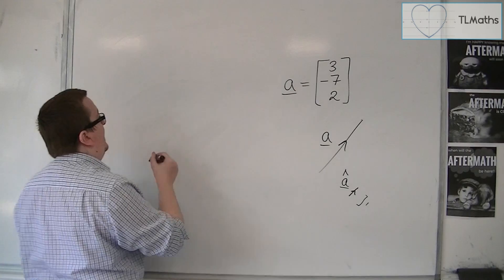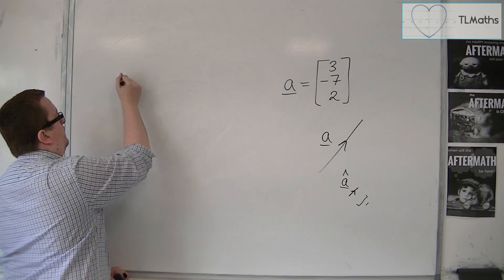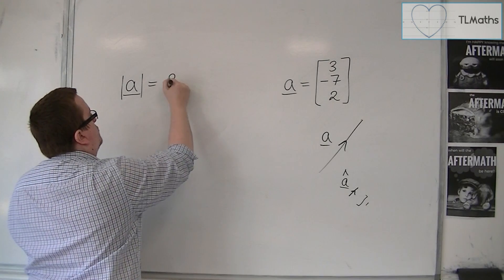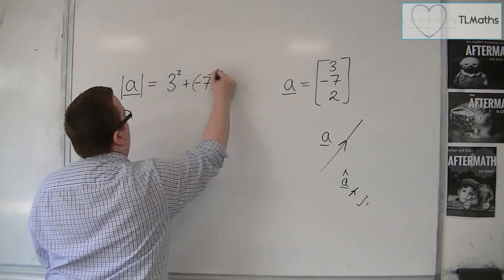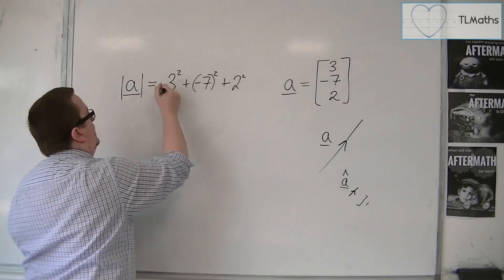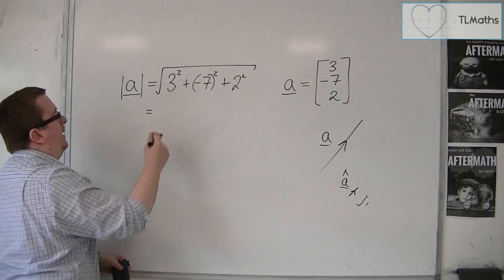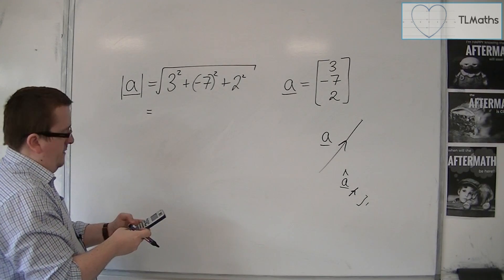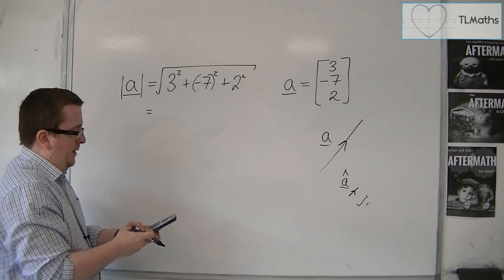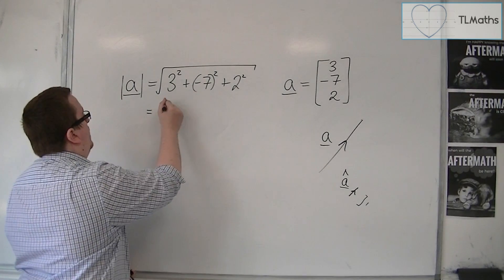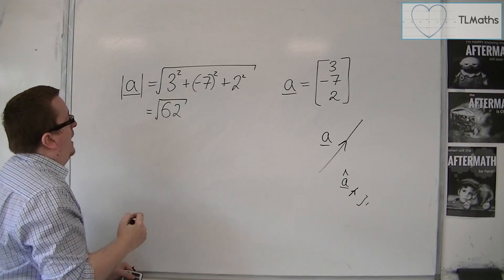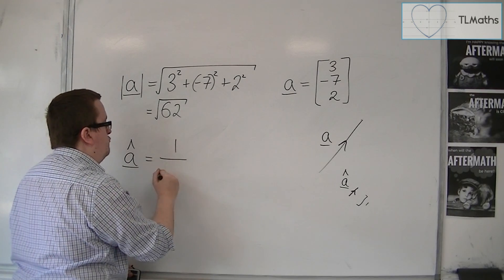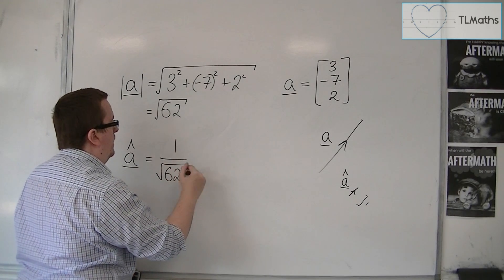So I'm going to find the length of A. So we worked out how to do that a couple of videos ago. So that's 3 squared plus minus 7 squared plus 2 squared, and that's square rooted. So we've got square root of 9 plus 49 plus 4. So that's the square root of 62. And so A hat is going to be 1 over root 62 of A.